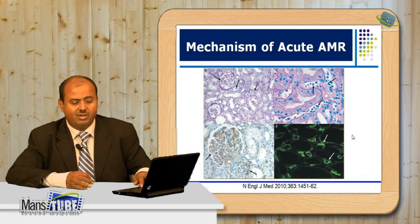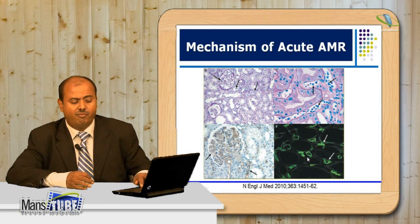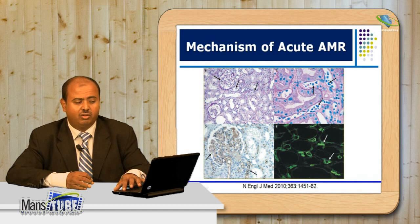Here in the glomerulus you find inflammatory cells, and here is peritubular capillaritis with linear deposition of C4d by immunofluorescence and immunohistochemistry. This is the full blown picture of acute antibody-mediated rejection.